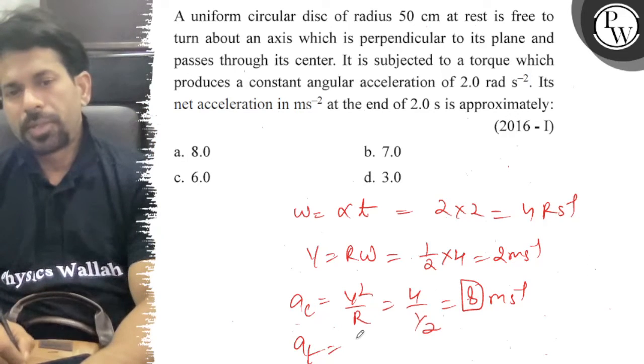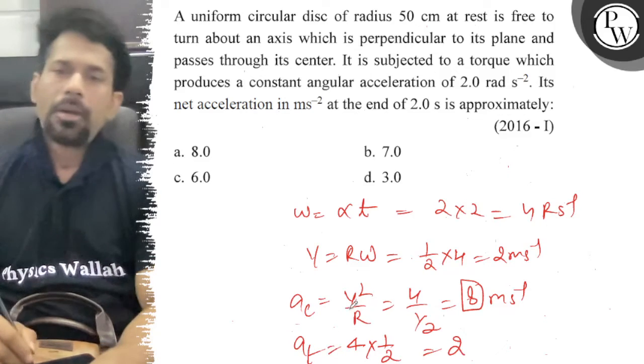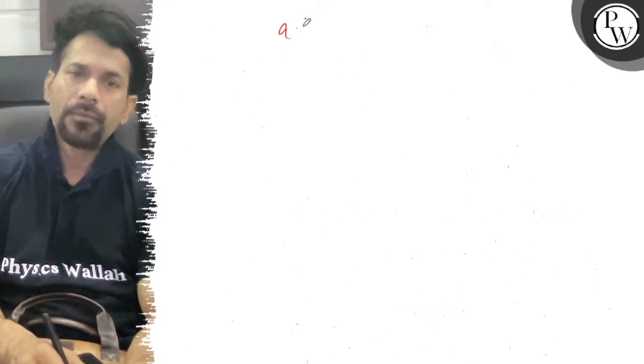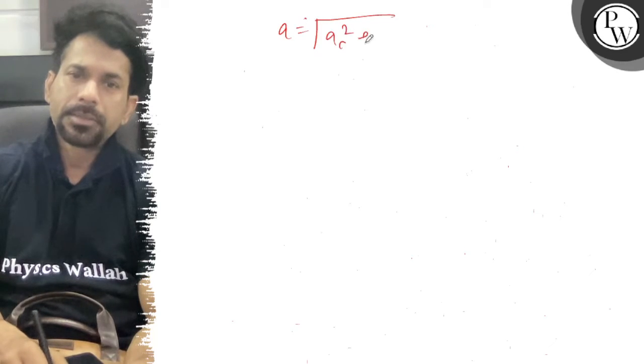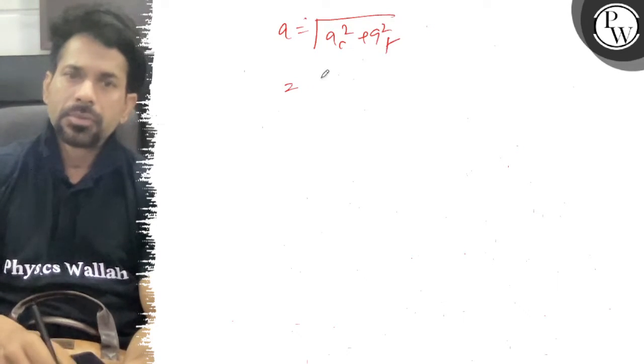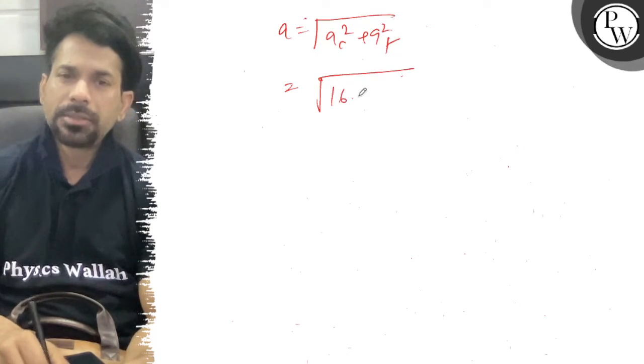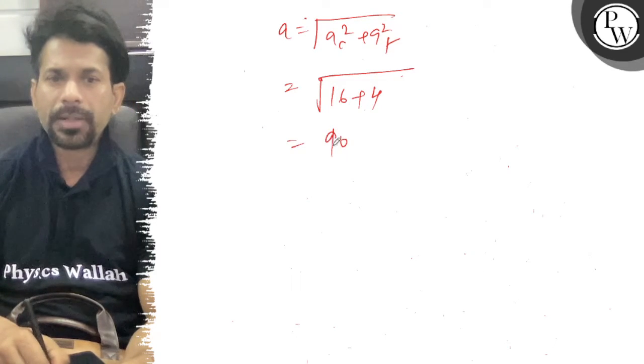The net acceleration a = √(ac² + at²). That is √(8² + 2²) = √(16 + 4) = √20.